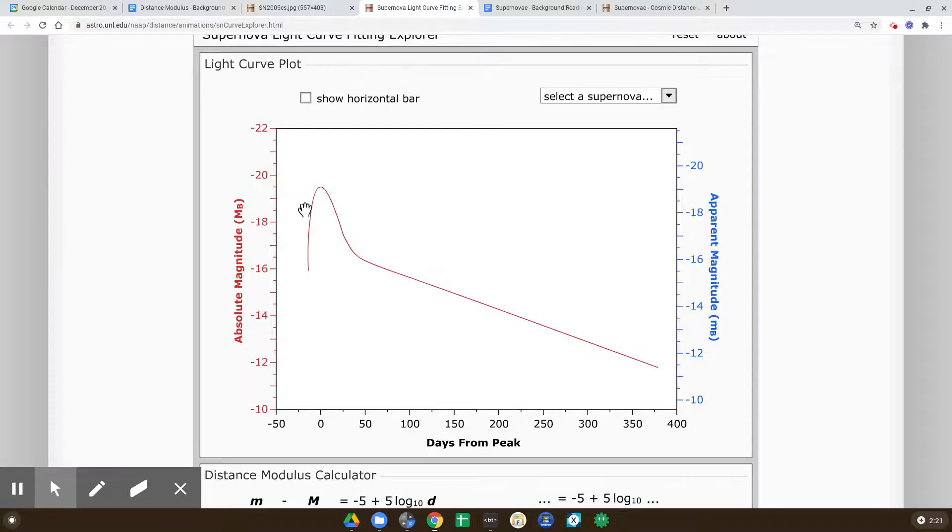Because again, the physics of what happens in these type one supernovae is the same every time. And so the peak absolute magnitude is going to be about minus 19.5 every single time.